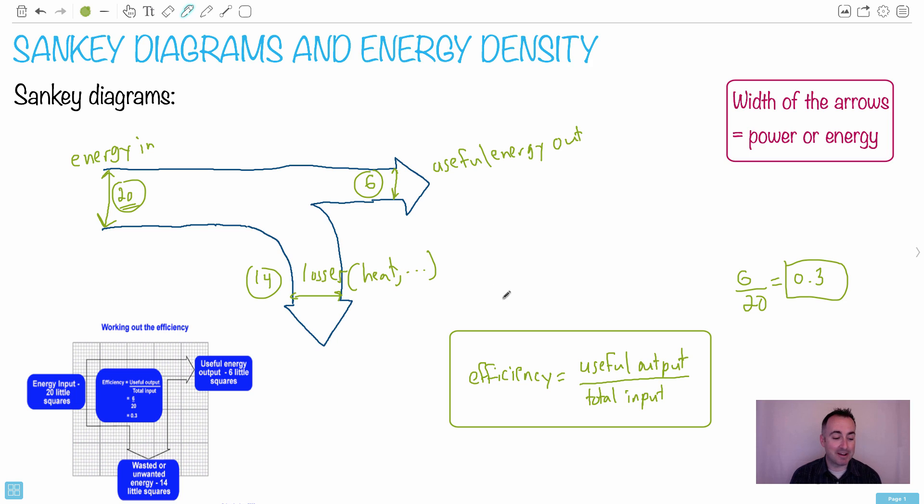In other words, this particular situation here is only 30% efficient. That's really all there is to the Sankey diagram. They show up often enough but they're actually really easy. You just got to know the efficiency is useful output over total input. In other words, this could be energy, could be power, it could be whatever.